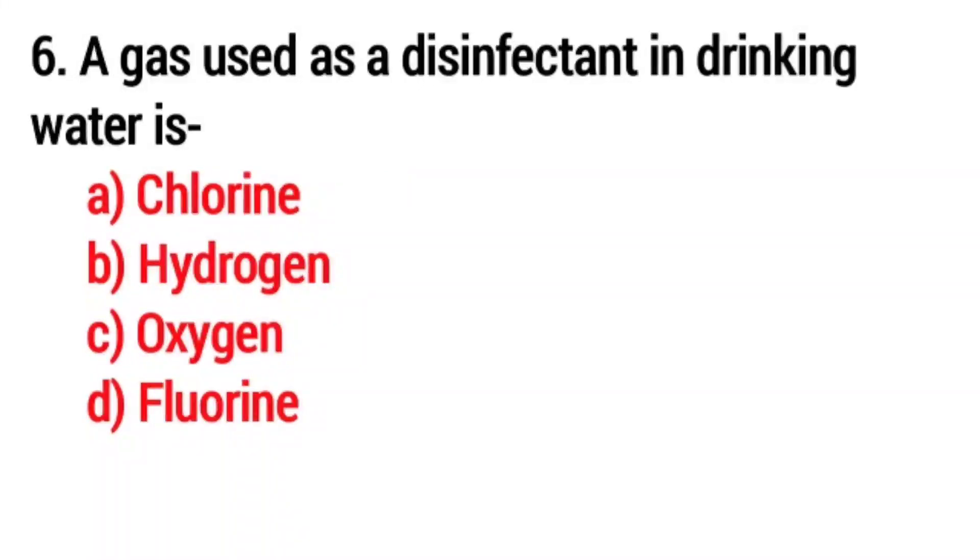Q6. A gas used as a disinfectant in drinking water is? The right answer is option A, Chlorine.